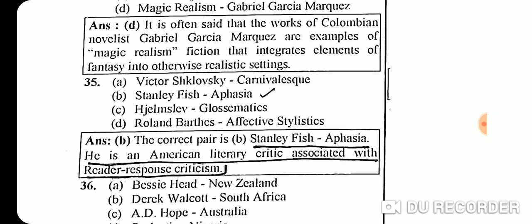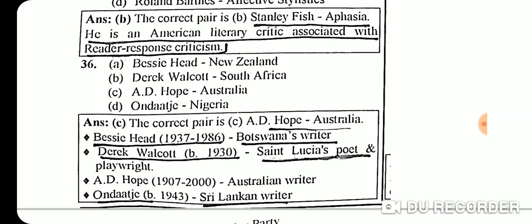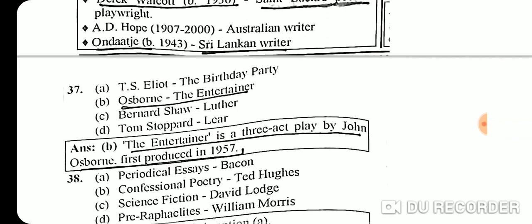Question 35: The correct option is Stanley Fish, associated with reader-response criticism. Question 36 correct pair: A.D. Hope is from Australia; Bessie Head is a Botswanan writer; Derek Walcott is a Saint Lucian poet; and Ondaatje is a Sri Lankan writer.